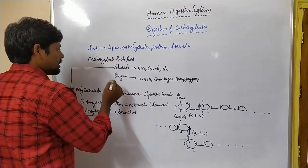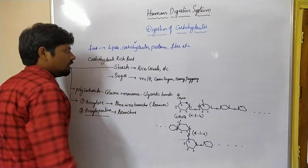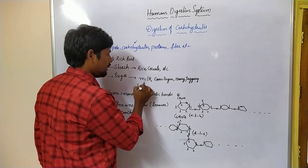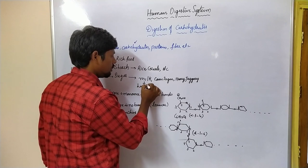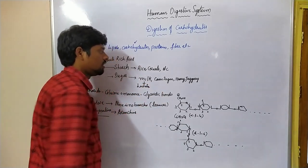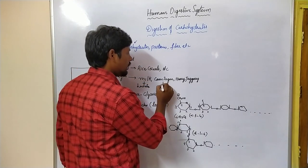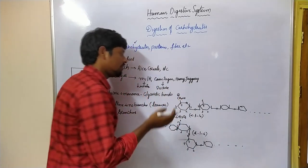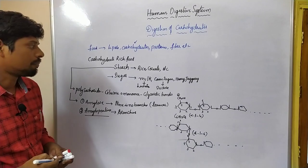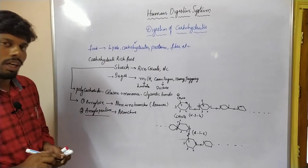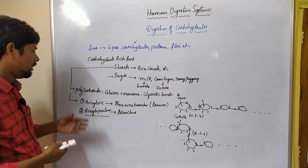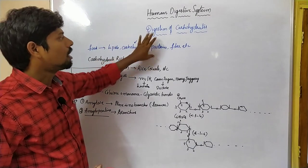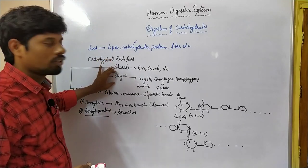Now let us see the sugars. Cane sugar — we know cane sugar is sucrose. Milk sugar — we know milk sugar is lactose. Honey and jaggery also contain sucrose. This is a brief introduction and basic points regarding carbohydrates, especially starch and sugars.